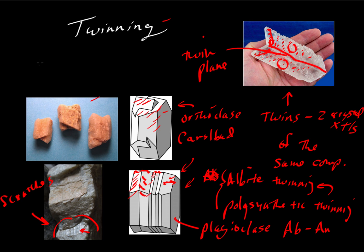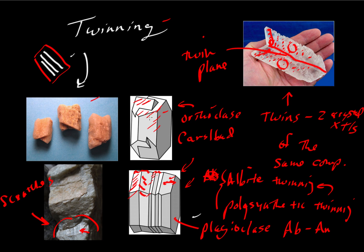In the microscope, we'll see it as black and white striping — a classic case where you would see white stripes alternating with black stripes. As you turn the stage, some of those twins will go dark while others go light and they'll alternate: one set of twins will go extinct together and the other set will also go extinct together. This is one of the classic ways of identifying plagioclase in thin section, because the plagioclase series has this very characteristic zebra striping in crossed polars. The Carlsbad twins are also evident — you'll see a mineral almost as if cut in half, where one side goes dark while the other is light, and then they reverse as you turn the stage.